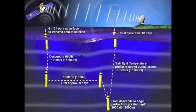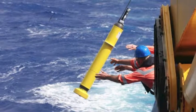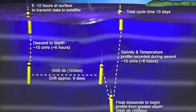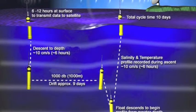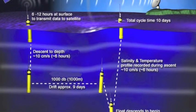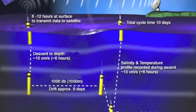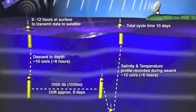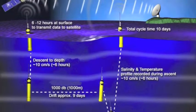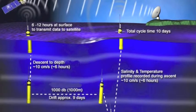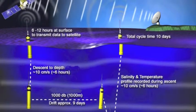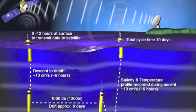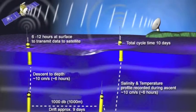This is a schematic of how a float operates. It gets deployed from a ship or an airplane, and as soon as it realizes it's in the water, it sinks down to its target depth at 1,000 to 2,000 meters, drifts at that depth for about 10 days, and then takes a profile from its profiling depth back to the surface, measuring pressure, temperature, and salinity along the way — sometimes also oxygen or other parameters. Once it hits the surface, it transmits the data through a satellite system to the ground station, and from there it goes to the data center for decoding, quality control, and data distribution.